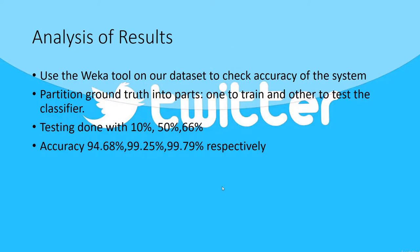The most important part of any project is analyzing whether it works well enough, and we've used Weka to do this for us. We only have a limited amount of labeled data which is the ground truth, so we partition it into parts — one part is used to train the classifier and the other part is used to test it. We did this with different percentages: 10%, 50%, and 66%. The results were startling — we had an accuracy of more than 94% in every case, and it went as high as 99.8%.